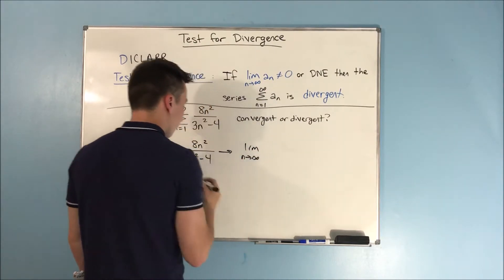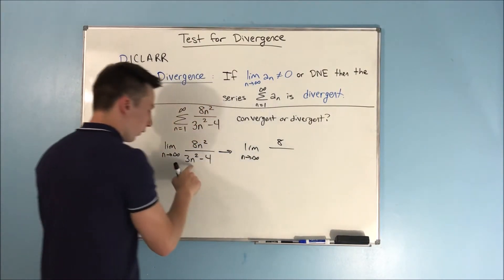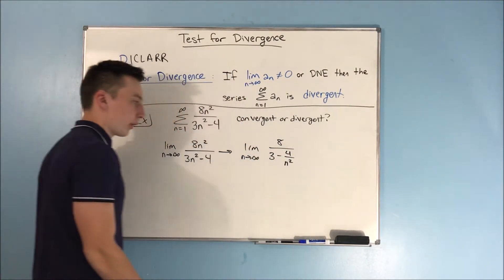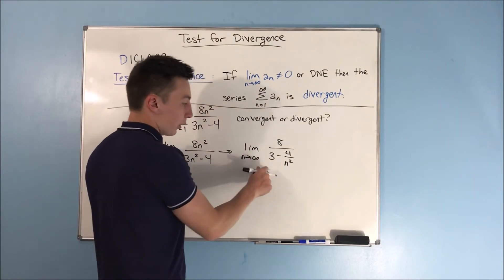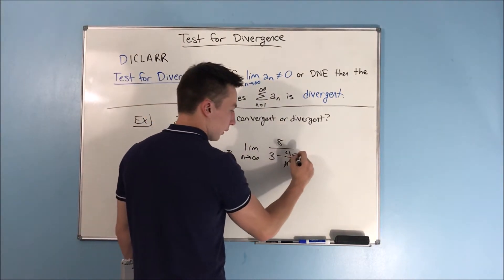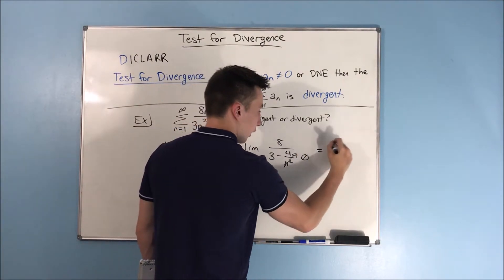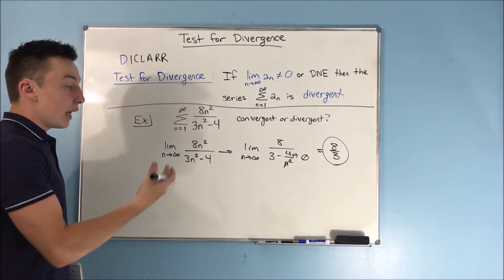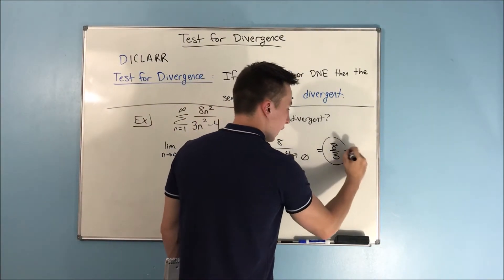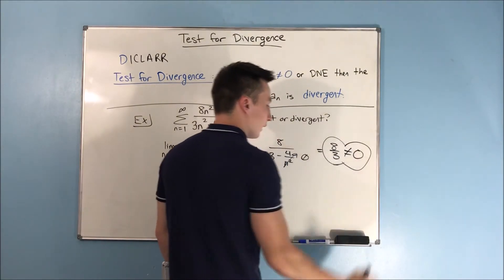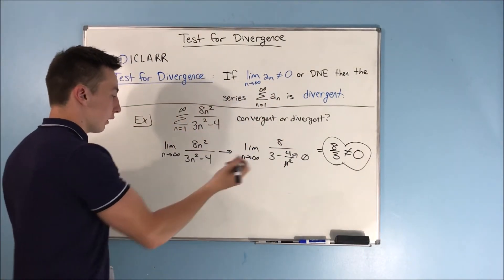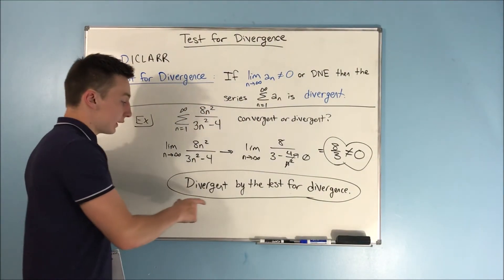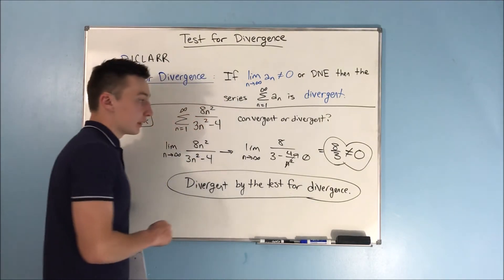Which will give us 8 over 3 minus 4 over n squared. From there, you can see that as n approaches infinity, this fraction will become zero. So we're just left with 8 over 3. Now, 8 over 3 does not equal zero. So that means that this is divergent. And we can say that this is divergent by the test for divergence.